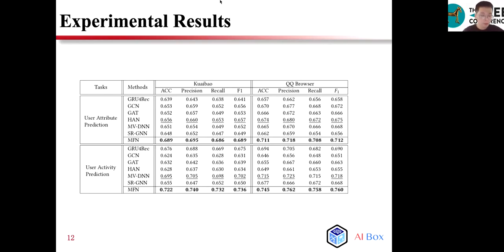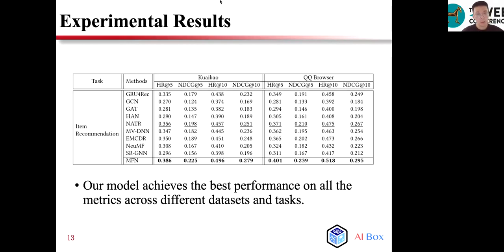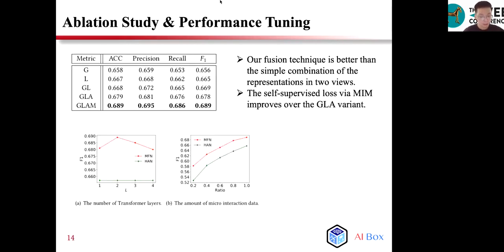Our model makes two major extensions for information fusion based on the Transformer architecture. We fuse user representation by category-based semantic alignment and use mutual information maximization to improve the learning of the fusion network. These two techniques effectively improve existing approaches for user representation learning. Also, we conduct the ablation study and hyperparameter tuning. The results indicate both macro and micro-interaction data are useful to learn the user representation and improve the performance of downstream tasks.